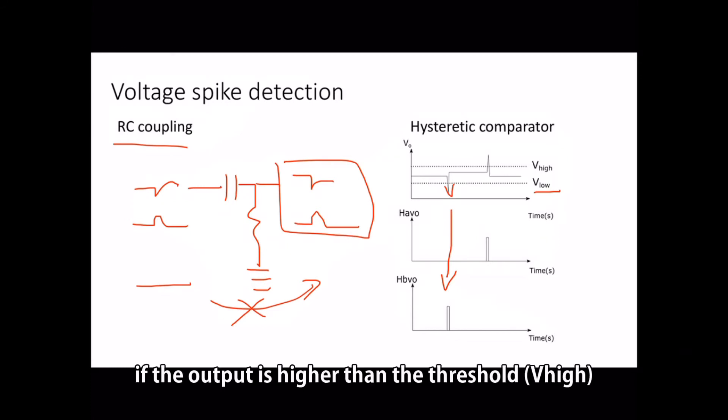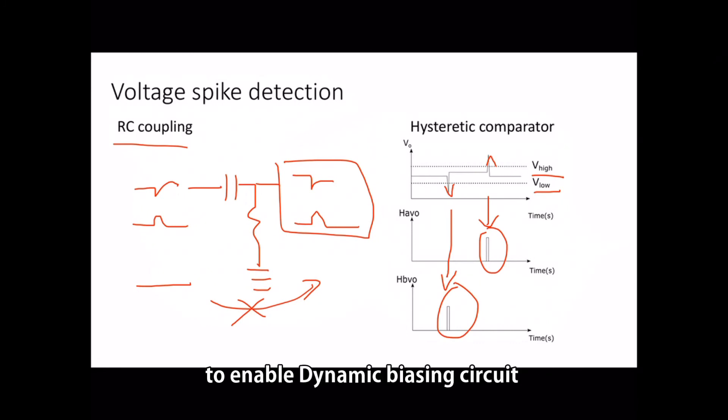If the output is higher than the threshold VH, here, it will trigger another comparator and generate another rail-to-rail impulse. These two impulses are the commands to enable dynamic biasing circuit and the slew rate enhancement circuit.